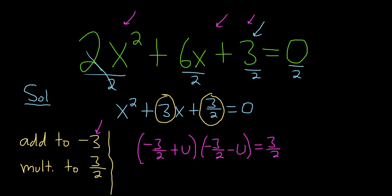So recap. First thing you do is you get rid of this number here, the 2, by dividing. Second step is you need 2 numbers that add to the opposite of whatever is here. So add to negative 3. And that multiply to 3 halves. Third step, you just take this and divide it by 2. Always, no matter what. And you know your answer is always going to be negative 3 over 2 plus u. Negative 3 over 2 minus u. These are your actual answers. And you know they multiply to 3 halves.